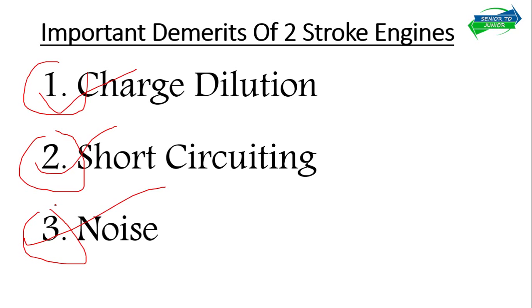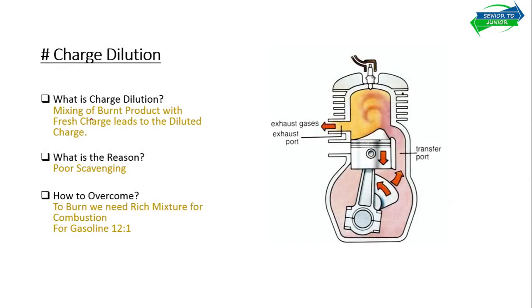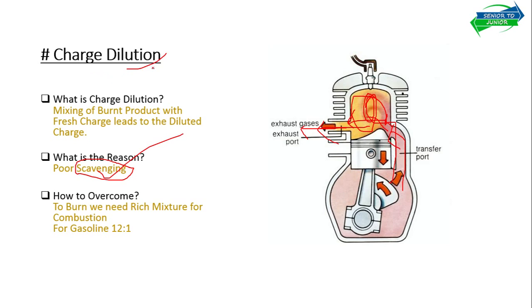Let's look at charge dilution, short circuiting, and noise. Before explaining charge dilution, let me introduce the term scavenging. Scavenging is a process in which the fresh charge removes the exhaust gases from the cylinder — the fresh charge comes in and pushes the exhaust gases out. Charge dilution basically happens due to poor scavenging.